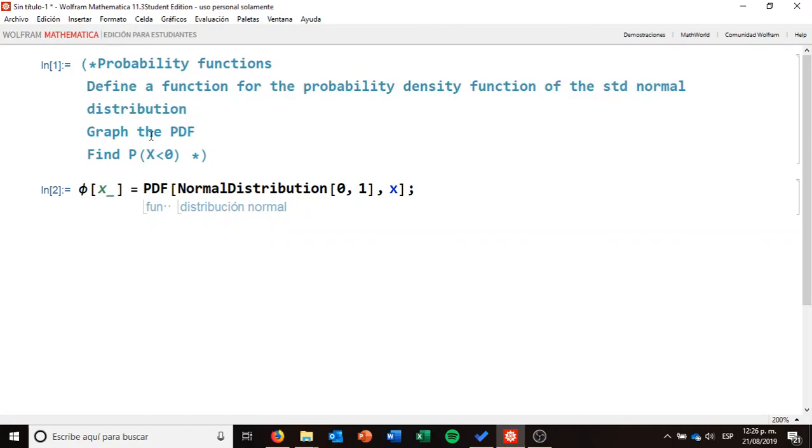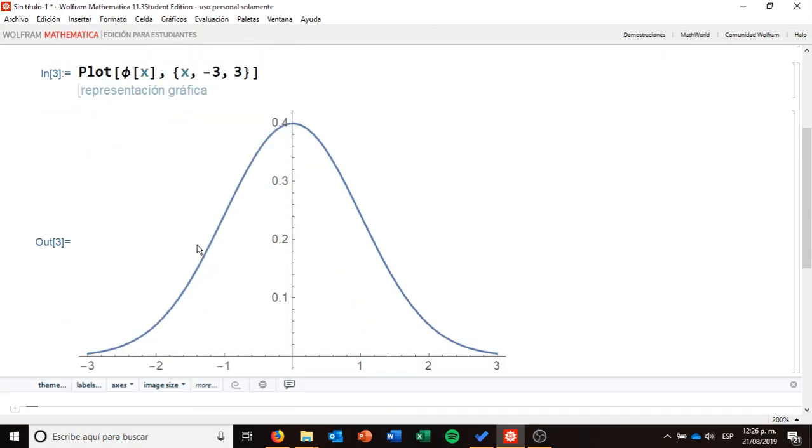The second exercise is to graph this function to see how it looks like. So I'm using the function plot, I'm going to introduce here phi of x, when x, and I already know that if I plot this from minus three to three, I'm going to have most of my data. So I press shift return, and what I can see is that this is the typical Gauss bell of the normal distribution that you see at every textbook.